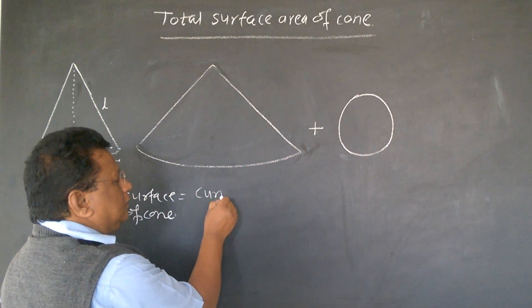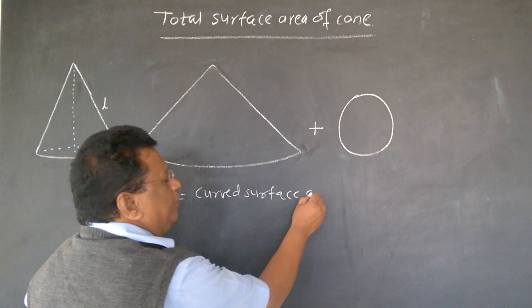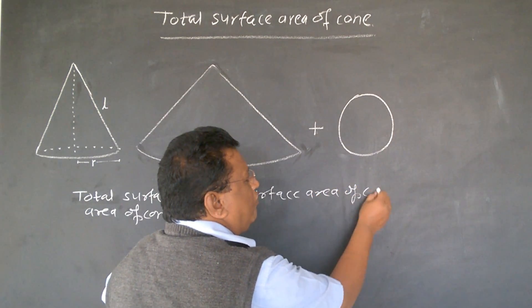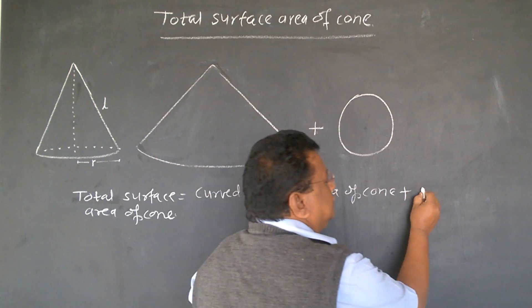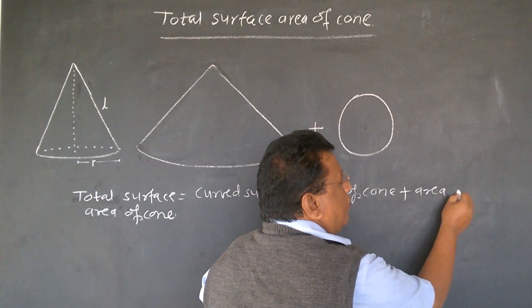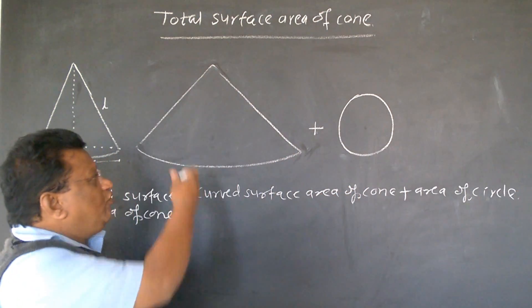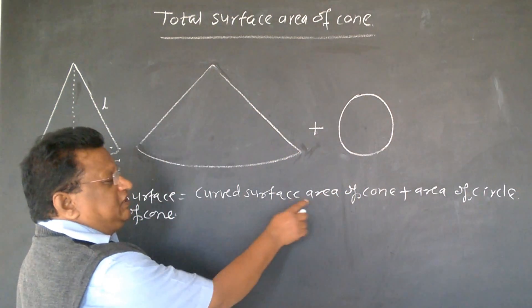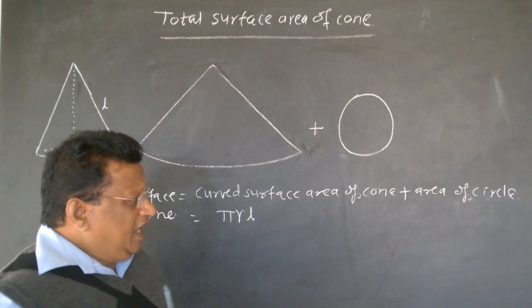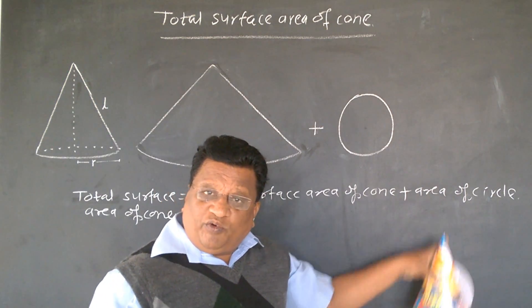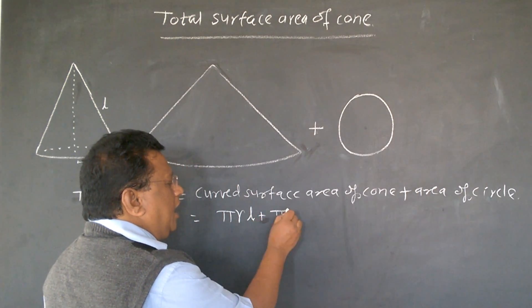Area of this part means what? Curved surface area of cone plus this area of circle. Just now, we have proved curved surface area of cone is pi r l. And area of circle, we know formula, pi r square.